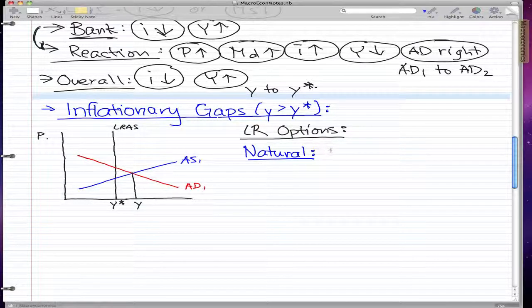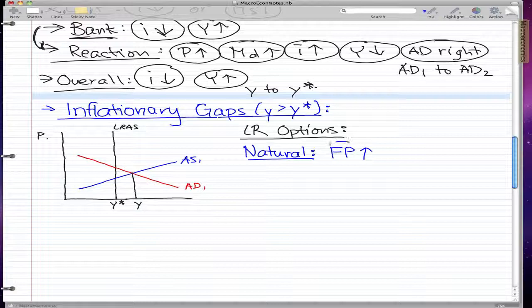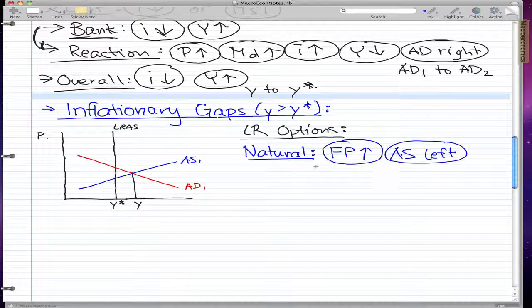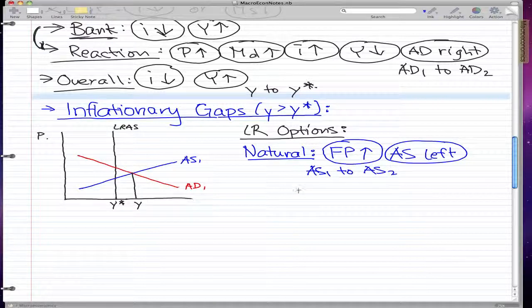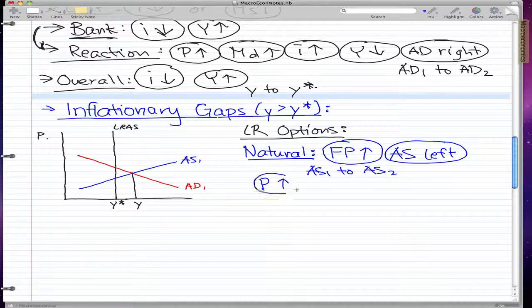The natural way, which is familiar by now, is by doing nothing. By doing nothing, the factor prices will increase, the aggregate supply will move to the left from AS1 to AS2, and this will lead to prices rising, money demand rising, and of course interest rising.